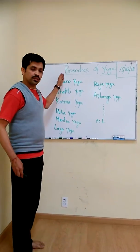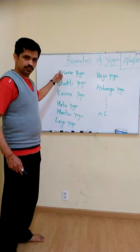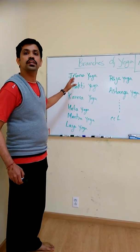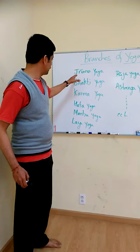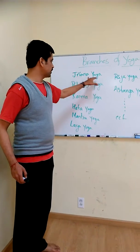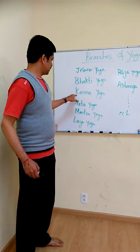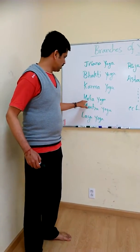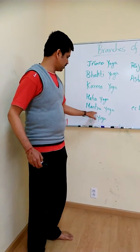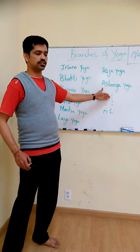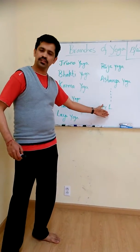There are so many types of yoga in our ancient history: Jnana Yoga, Bhakti Yoga, Karma Yoga, Hatha Yoga, Mantra Yoga, Nayo Yoga, Ajayoga, Ashtanga Yoga, etc.